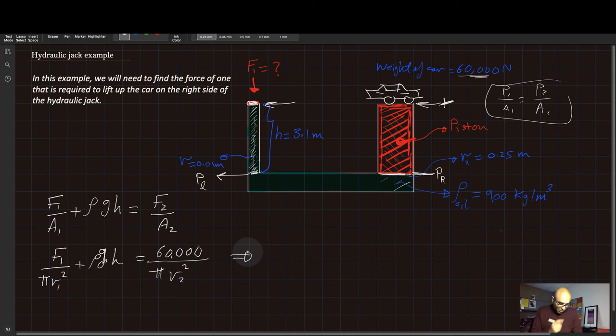Now let's plug in all the numbers. F1, we still need to find that, over pi R1 squared, where's R1, there it is, 0.01 squared plus rho which is 900, the density of the oil, G is 9.8, and H is 3.1 meters.